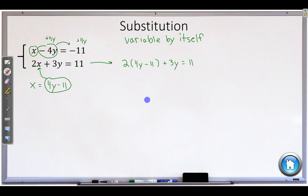And if I only have one variable, you can solve this. It doesn't mean it's going to be easy to solve, but we can. So we first distribute the 2. 8y minus 22 plus 3y is equal to 11. Let's see. The 8y and the 3y make 11y minus 22 is equal to 11.